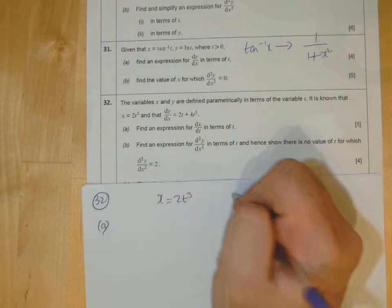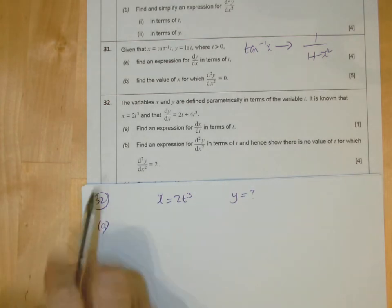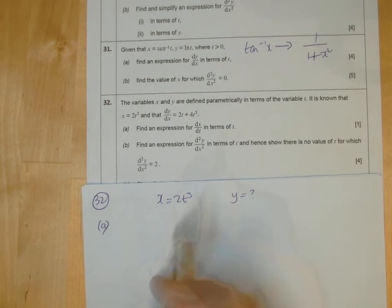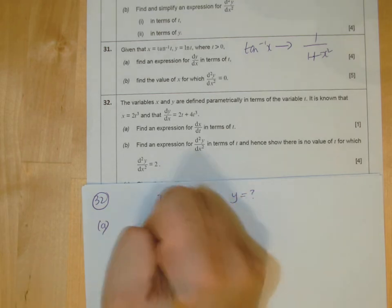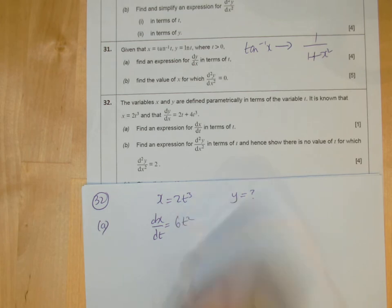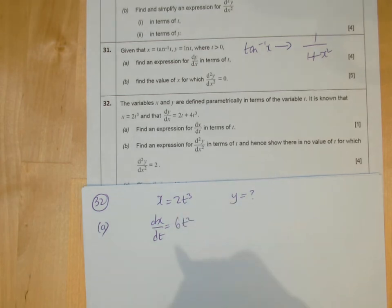We don't know what y is. Y is question mark. Now, part a says find the expression for dx dt. Well, that's easy enough. Just differentiate this. Take the three down, so you get 6t squared, one mark in the bag. So that's sorted.